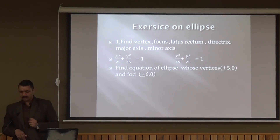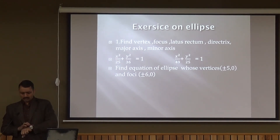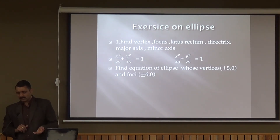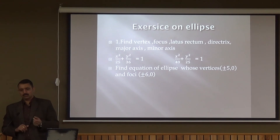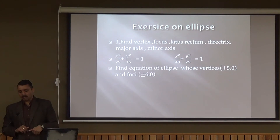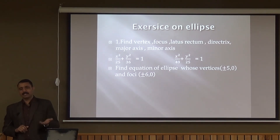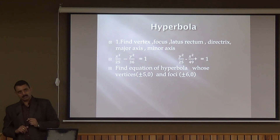Another question asks for the equation of an ellipse whose vertices and foci are given. To find the equation of an ellipse, we need the values of a and b. If the vertex is at (±a, 0), then a = 5. If the coordinate of the focus gives ae = 6 (for example), we can find e and then find b using b² = a²(1 − e²).